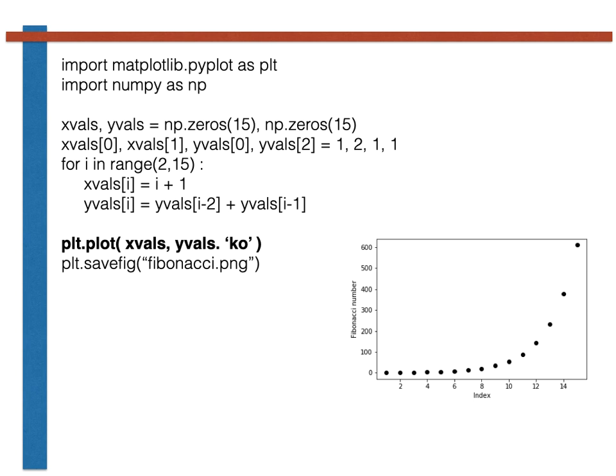In the code shown here, the first part sets the values in the two lists that are to be plotted. This code starts by creating two arrays, xvals and yvals, each of which has 15 elements. The first and second elements in xvals are then set equal to 1 and 2, while the first two elements of yvals are set equal to the first two numbers of the Fibonacci sequence, which are both 1.